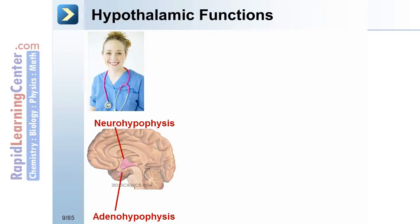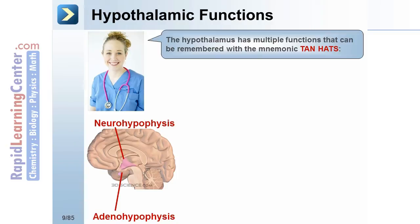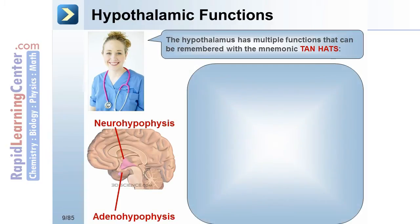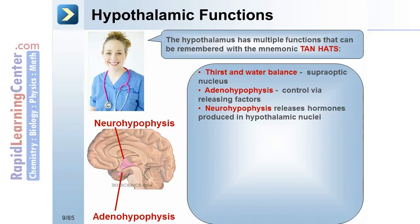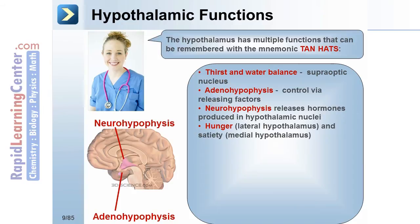Now let's take a closer look at the function of specific areas of the brain, beginning with the hypothalamus. The hypothalamus has multiple functions that can be remembered with the mnemonic TAN-HATS, referring to thirst and water balance through the supra-optic nucleus, the adenohypophysis with control via releasing factors, the neurohypophysis which releases hormones produced in hypothalamic nuclei, and hunger and satiety controlled through the lateral and medial hypothalamus respectively.